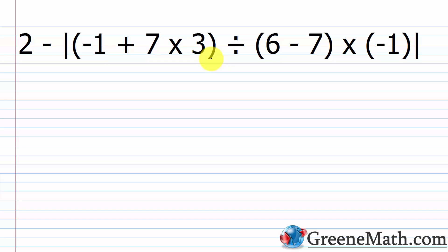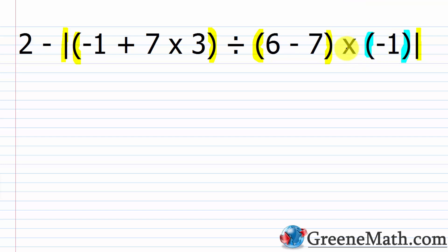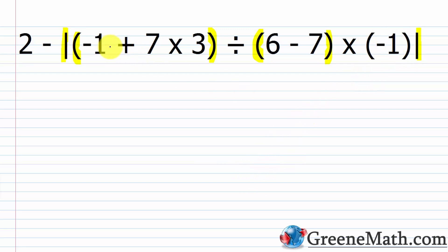For the final problem: 2 - |(-1 + 7 × 3) ÷ (6 - 7) × (-1)|. We work inside the absolute value bars first. Inside, we have parentheses around (-1 + 7 × 3) and around (6 - 7). Note that the parentheses around negative one at the end are mainly to separate the multiplication symbol from the negative sign.